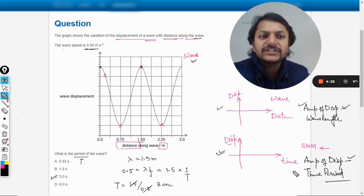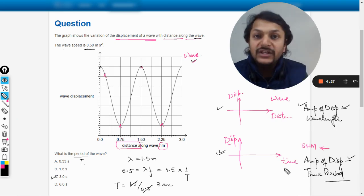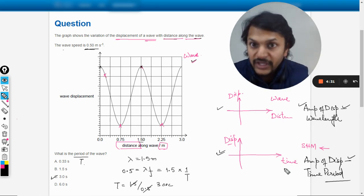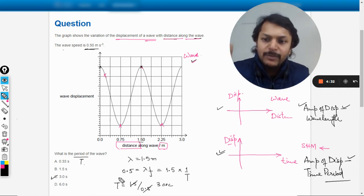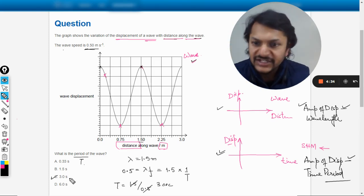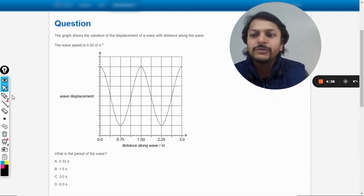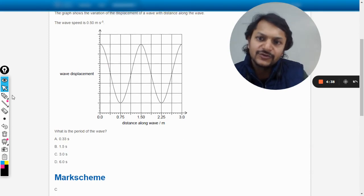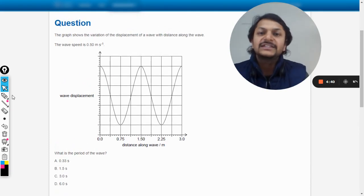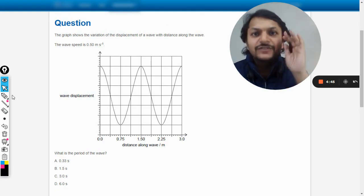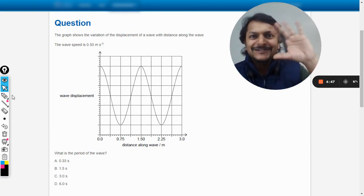So if this graph was given, you could have found the time period by reading out the graph. Okay, so in this method we can say that the answer is C. Let us verify the answer from the mark scheme now. Yes, the answer is C. So my dear students, this is Professor Varun. Please subscribe to the YouTube channel and share the video with all your friends. All the best, bye.